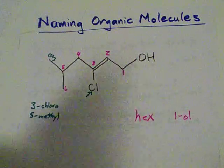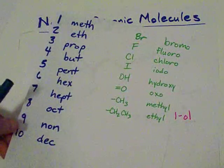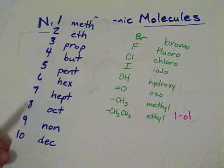I've got a little list here of some of the side groups like bromo, fluoro, chloro, iodo, hydroxy, oxo, methyl, and ethyl. You'll get used to it.